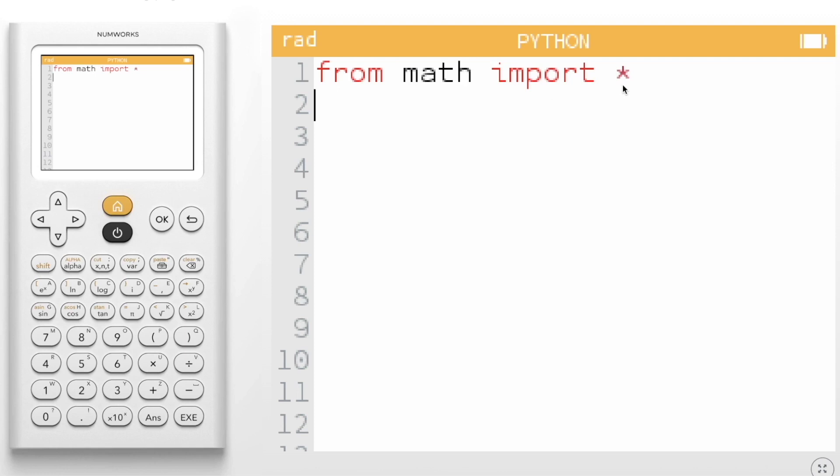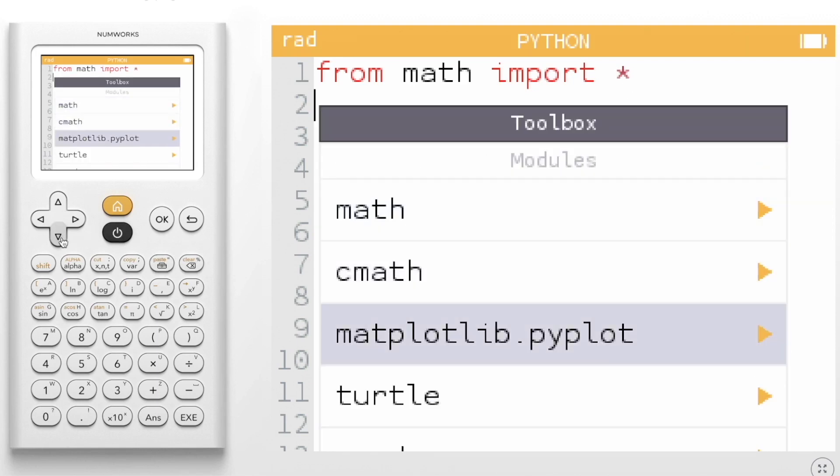If we only wanted to import a specific function from the math module, we'd replace the asterisk with the function name. Other modules will provide you access to additional functions.